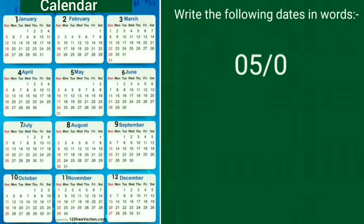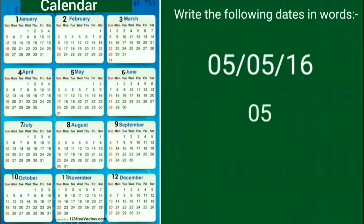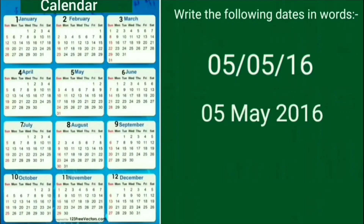First is 5-5-16. In this, date is 5th, month is 5th, and year is 16. Students, look at the calendar — which is the 5th month of a year? Yes, May. So, we write it as 5 May 2016.